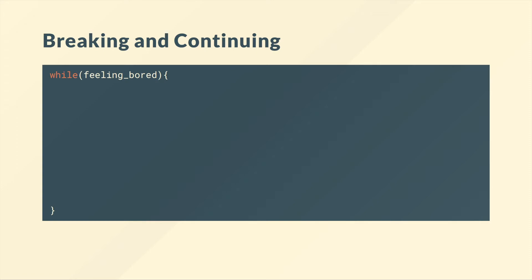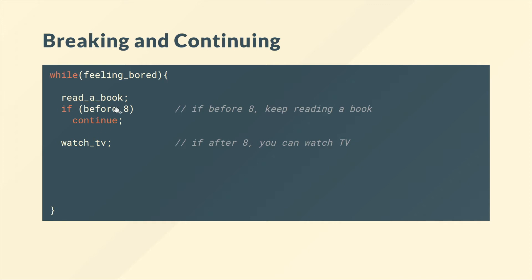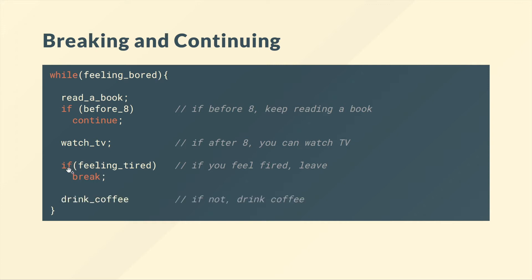Here's an example. We have a while loop with some condition "while feeling bored". First we read a book. Then there's a condition: if before 8pm, we continue — which means we go back to the top and read a book again. As long as it's before 8pm, we keep reading. If it's after 8pm, we can watch TV. Then if we're feeling tired, we break — we leave the loop. If not tired, you drink coffee. You have to look at it a bit to see what's going on, but you could do this with multiple loops — sometimes it's just easier to use break and continue, but do be careful.